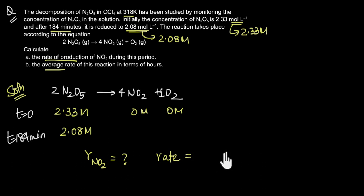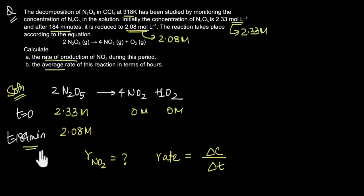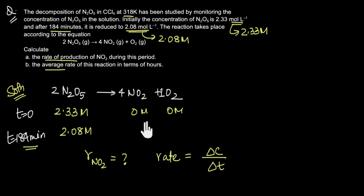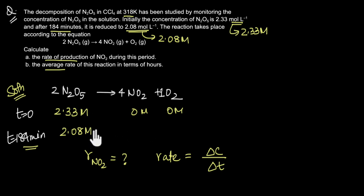Rate is the change in concentration that happens per unit time. So if we can figure out the change in concentration of NO2 happening in this time period, we can easily figure out the rate of production of NO2. How do we figure out the change in concentration of NO2? We can think about the amount of NO2 formed by first thinking about the amount of N2O5 that has reacted.